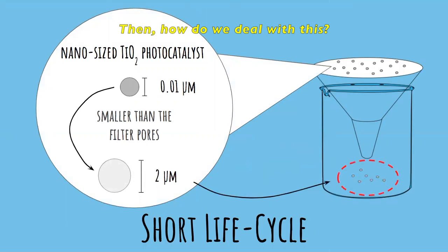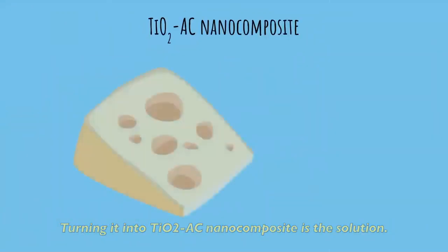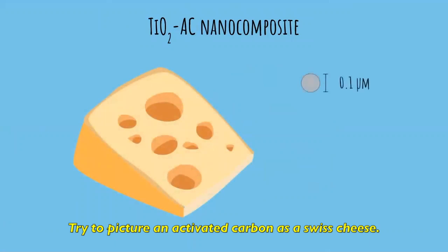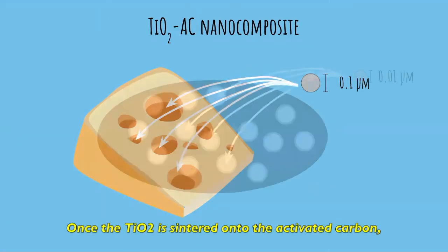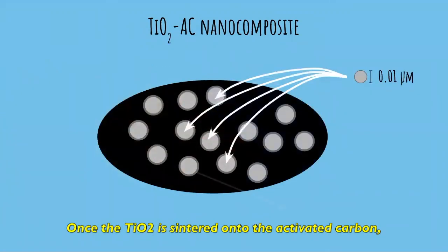Then, how do we deal with this? Turning it into TiO2-AC nanocomposite is the solution. Try to picture an activated carbon as a Swiss cheese. It has micropore structures that can be filled with the TiO2. Once the TiO2 is sintered onto the activated carbon,